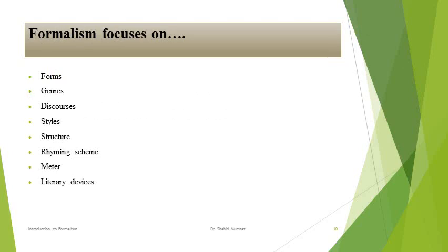In short, formalism focuses on the following things, including but not limited to: forms, genres, discourses, style, structure, rhyming scheme, meter, and literary devices — all literary devices. You can search for the full list easily. Meter is included among those devices, as are irony, satire, and other devices.